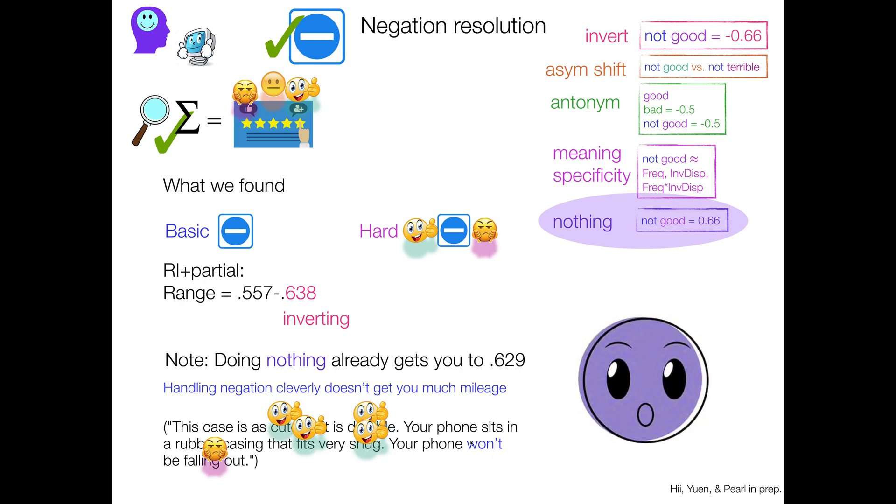So ideally what you would like to do is like negate this thing and like make this into a positive. But suppose you do nothing, suppose you like literally do nothing, and you just kind of aggregate this stuff together. Well, a bunch of positives and a little negative is still probably going to get you positive, which in fact is the right sentiment here. So doing nothing can work pretty well if what negation is doing is not that important to the overall sentiment of the review.